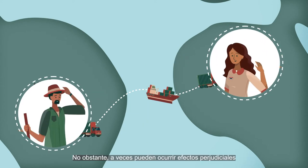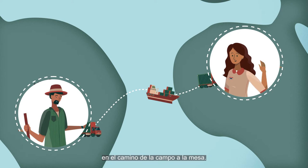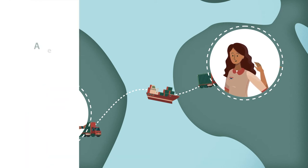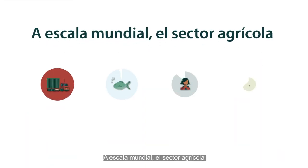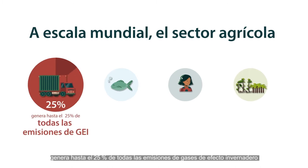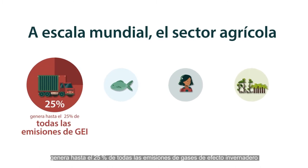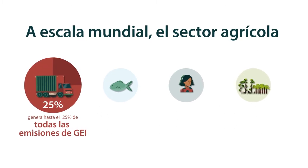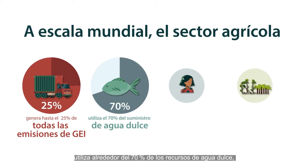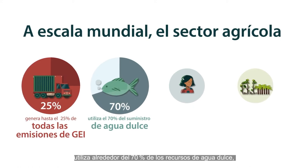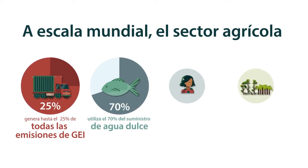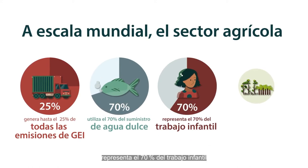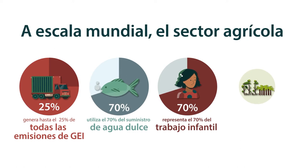However, at times there can be harmful impacts along the way that can take place from the farm to your table. Globally, the agricultural sector contributes up to 25% of all greenhouse gas emissions, uses approximately 70% of freshwater resources, and accounts for 70% of child labour.